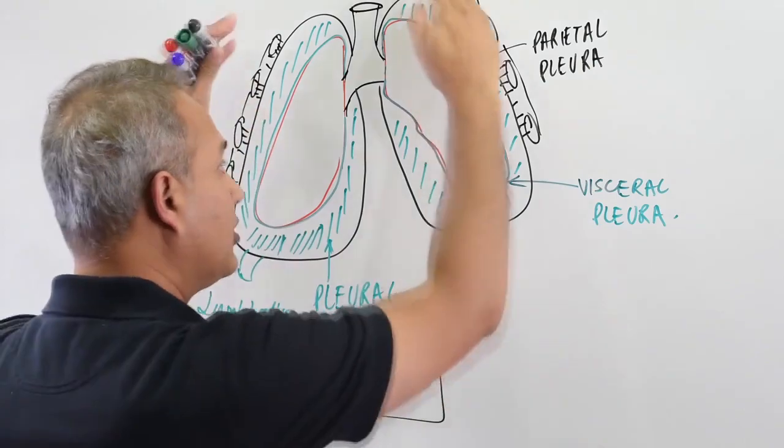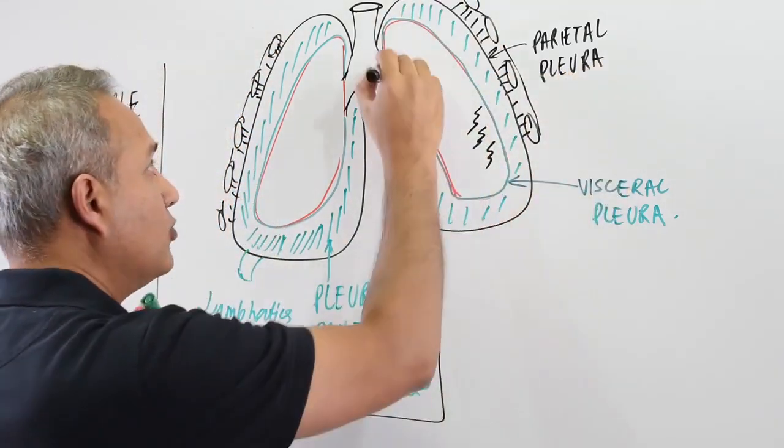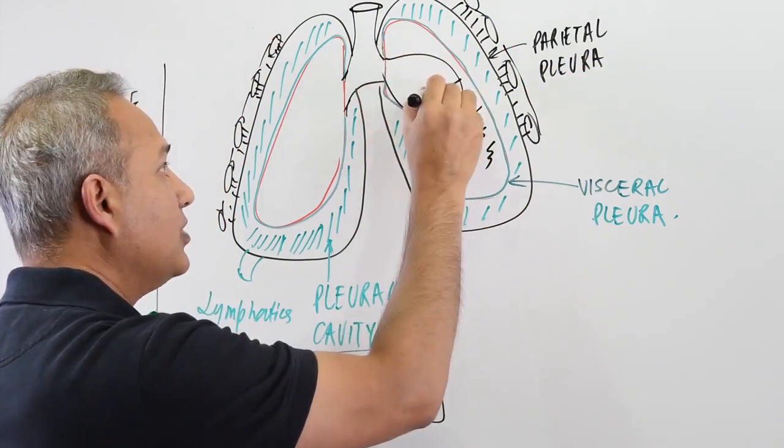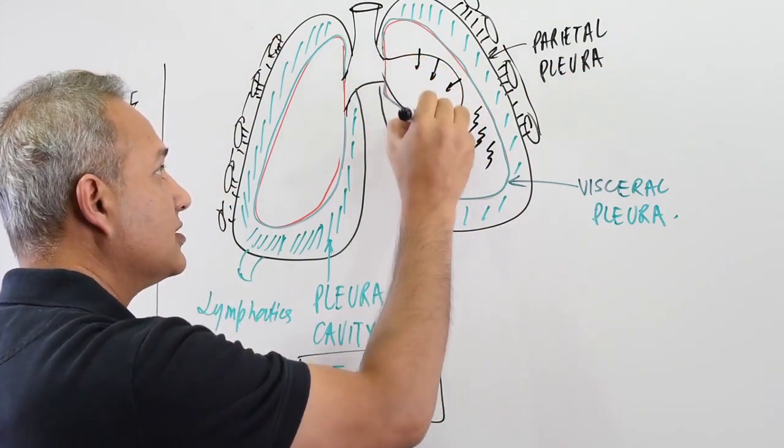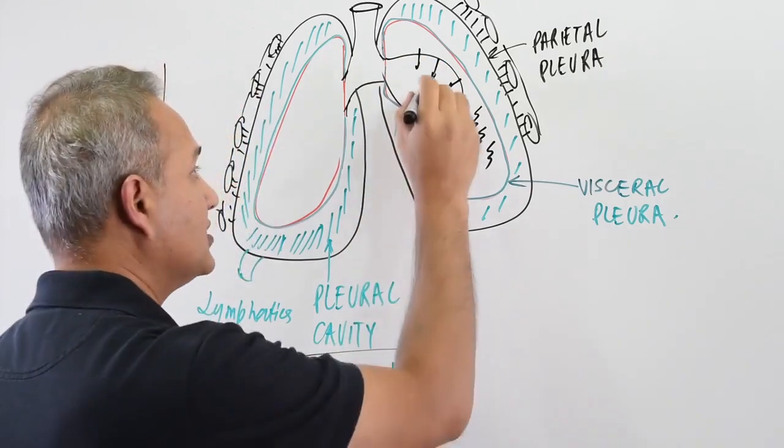So if you somehow remove the forces out here that are pulling the lungs open, then the forces that are pulling the lungs inwards, recoil forces will win and the lungs would shrink and collapse.